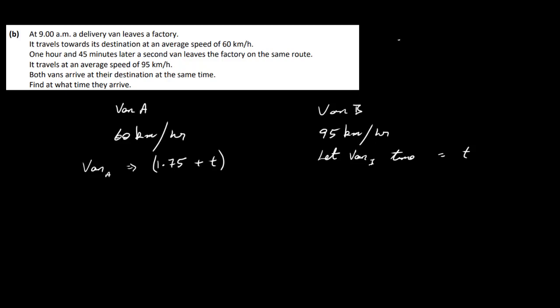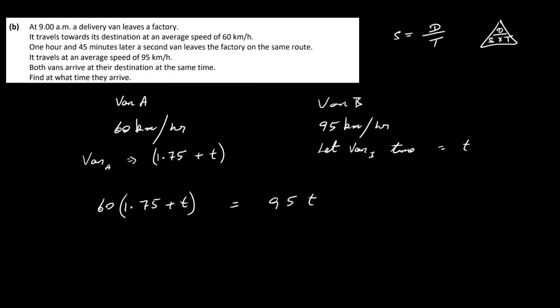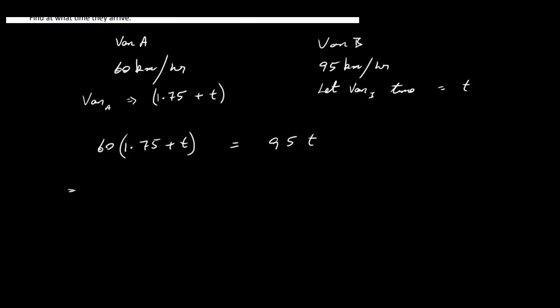So remember, speed is equal to distance over time, or you can use that silly triangle, whatever way you want to do it. But we're looking for distance now, so distance is speed times time. So the distance that van A is traveling is going to be 1.75 plus T, multiplied by its speed, which is 60. And that's going to be equal to the distance that van B traveled. That's going to be 95, 95 times T. So all we've got to do here really is just solve for T.